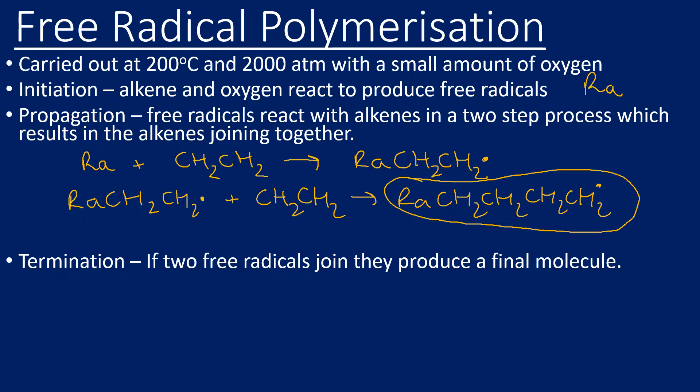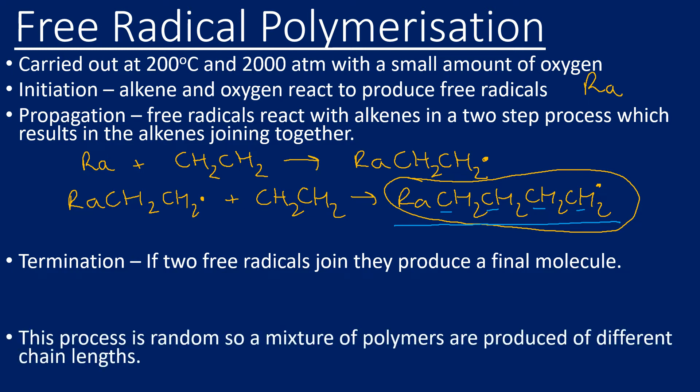Eventually, two free radicals can come together, which terminates the reaction, producing a final molecule. For example, if two radicals each containing four carbons came together, you'd end up with eight carbons in a chain — that terminates it. This process is very random, which means you get a large mixture of polymers of different chain lengths — some very long chains and some shorter chains.